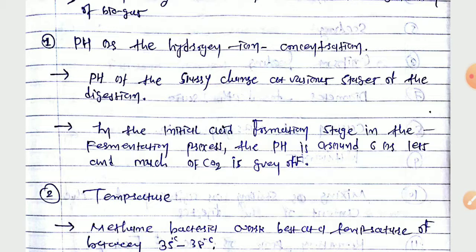The second factor is temperature. In biogas generation from biomass, methane bacteria work best within a specific temperature range.